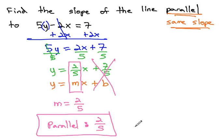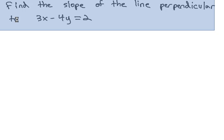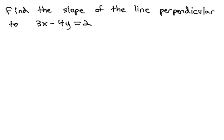In a very similar way, we can find the slope of a perpendicular line. In this example, we're asked to find the slope of a line perpendicular to 3x minus 4y equals 2. Perpendicular lines have opposite reciprocal slopes.